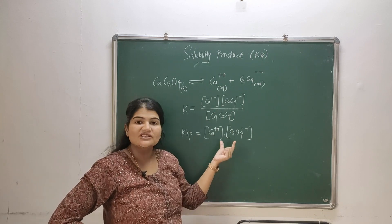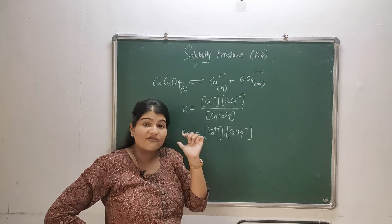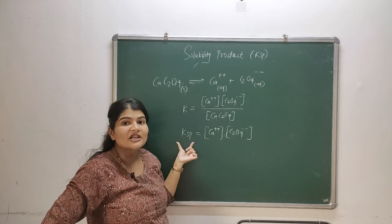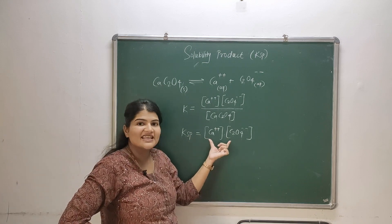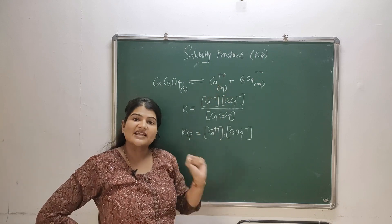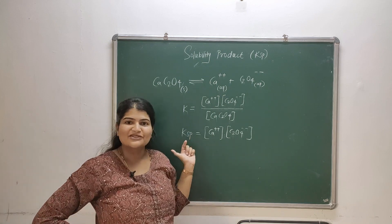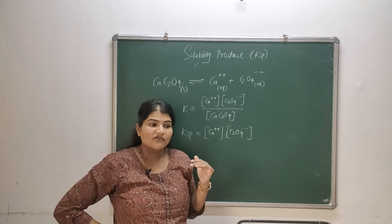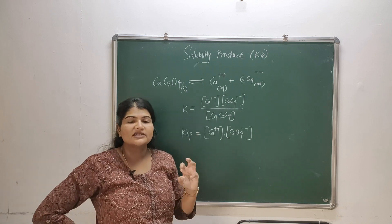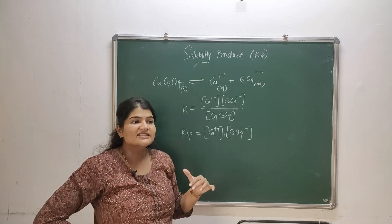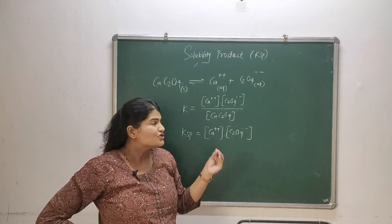So this is ionic product. But why we are calling it solubility product? Because the ionic product is taken at saturation point. So for saturated solutions, if you take the ionic product, it will be called as solubility product.